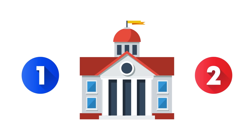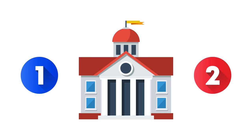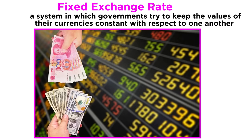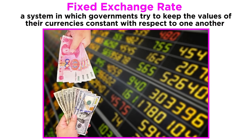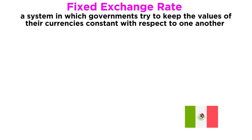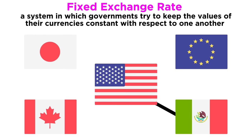There are two main ways governments adjust the value of their country's currency. A system in which governments try to keep the values of their currencies constant with respect to one another is called a fixed exchange rate system. In a fixed exchange rate system, countries typically fix or peg their exchange rates to one country with a strong, stable currency.